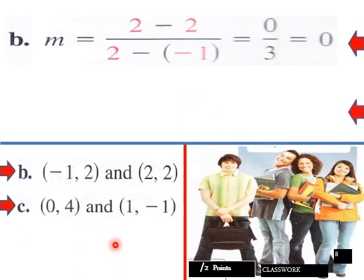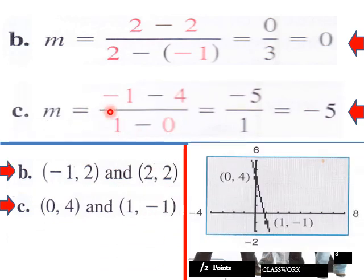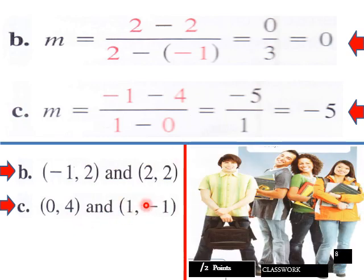And then zero, four, and one, negative one. So again, plugging that in, negative one minus four, then one minus zero. So we get negative five over one. So we have a steep slope here, negative five, with our two points plotted. And then that would be the actual graph of these two points here.